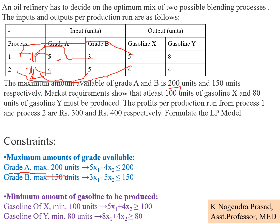For gasoline Y, the minimum required is 80 units, so the constraint is greater than or equal to 80. Gasoline Y output is 8 units from process 1 and 4 units from process 2. So: 8x1 + 4x2 ≥ 80. Finally, x1 and x2 are non-negative variables, so x1, x2 ≥ 0. This completes the LP model formulation. Thank you very much.